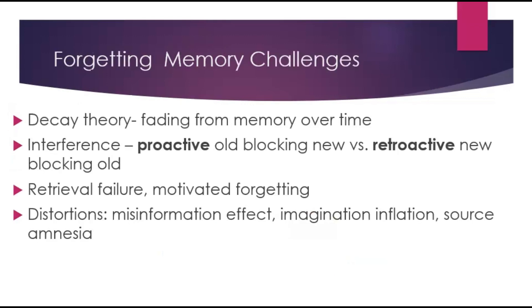When it comes to forgetting, decay theory describes fading from memory over time. Interference occurs when other information blocks or disrupts retrieval of the target memory. Proactive interference is when old memories block the ability to learn or remember something new. Retroactive interference is when new memories block the ability to recall old information. Retrieval failure is when information is stored in long-term memory but you can't access it — sometimes called tip-of-the-tongue phenomenon. Motivated forgetting occurs when a memory may be too painful, embarrassing, or anxiety-provoking, so the brain actively pushes it out.